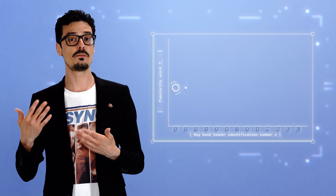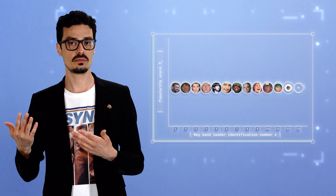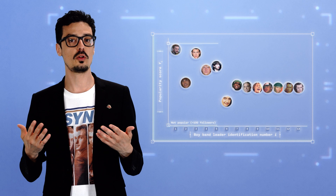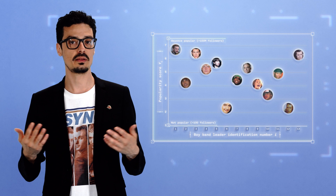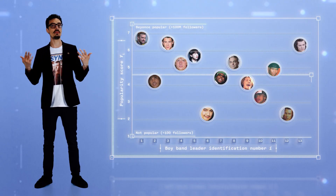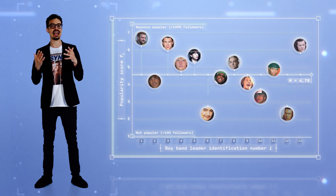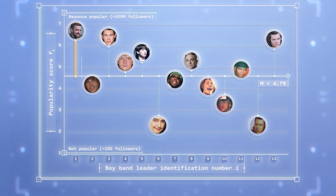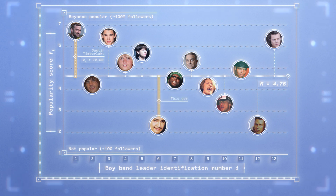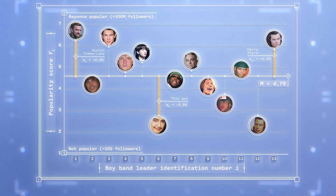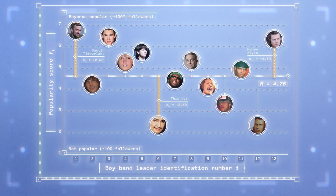Imagine conducting a study on the popularity of the leader of the best-selling boy band from the 90s and 2000s. You spend your day gathering the number of Instagram followers of each of these boy band leaders, placing them on a seven-point continuous scale. The simplest way to summarize this data is by using the mean. The average popularity score of the boy band leaders is 4.75. This very simple model fails to accurately represent the actual popularity of boy band leaders. Justin Timberlake's popularity score is way off the mean with a difference of plus two, another member has a difference of minus 2.5, and Harry Stein has a difference of plus 1.5. In ordinary least-square regression, the aggregate of the mean of these squared differences — all these little arrows — is known as the variance of the residuals.